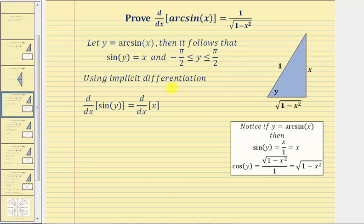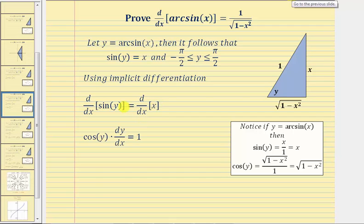For the next step in our proof, we'll use implicit differentiation and differentiate both sides of the equation sine y equals x with respect to x. The derivative of sine y with respect to x would be cosine y times dy/dx — notice the extra factor of dy/dx because of the chain rule — and on the right side, the derivative of x with respect to x is equal to one.